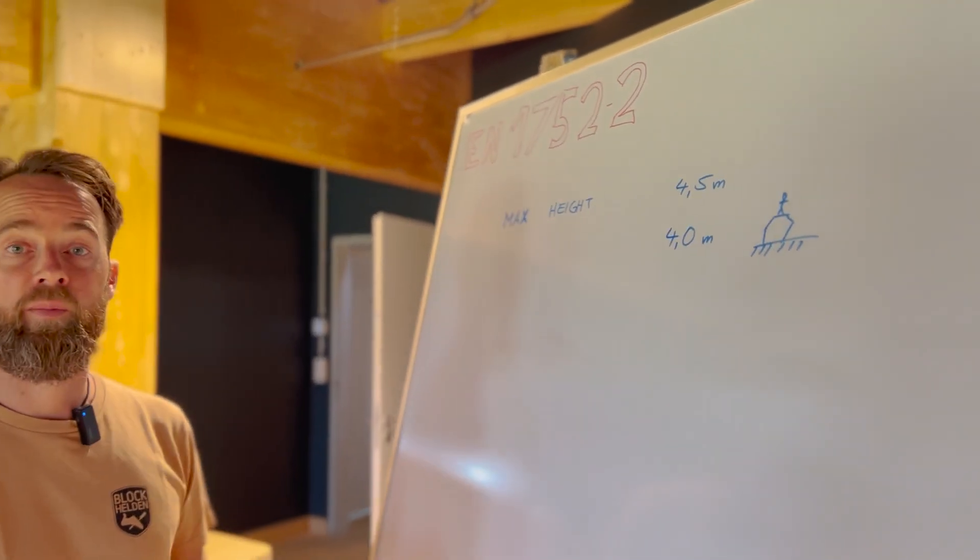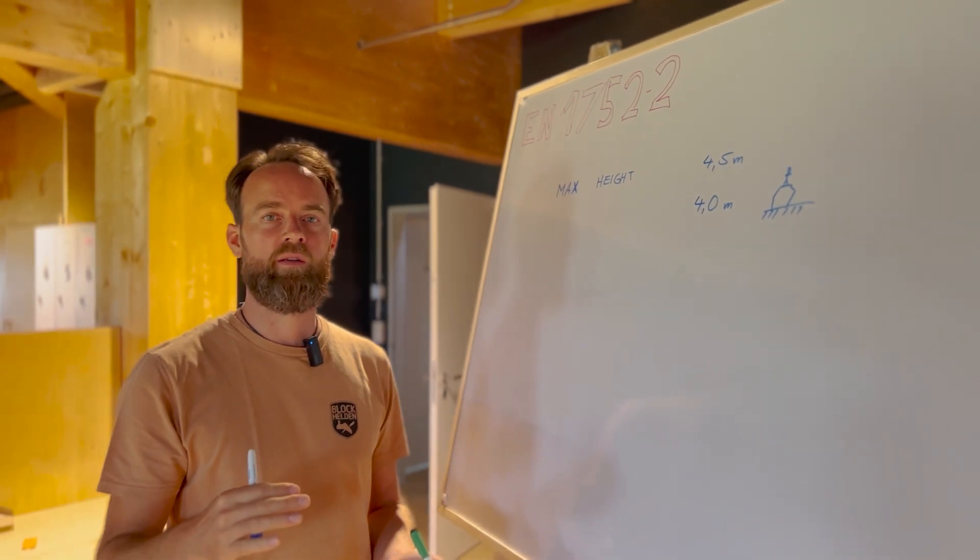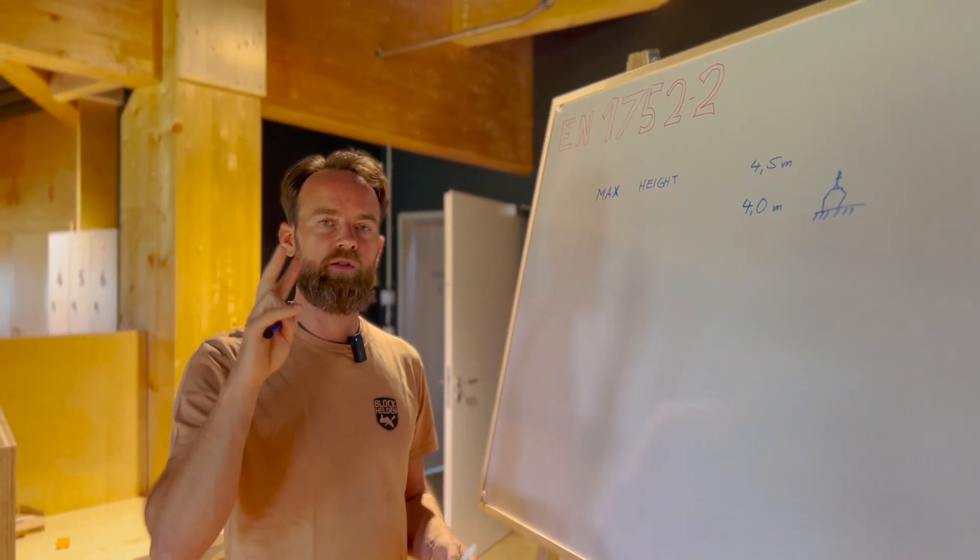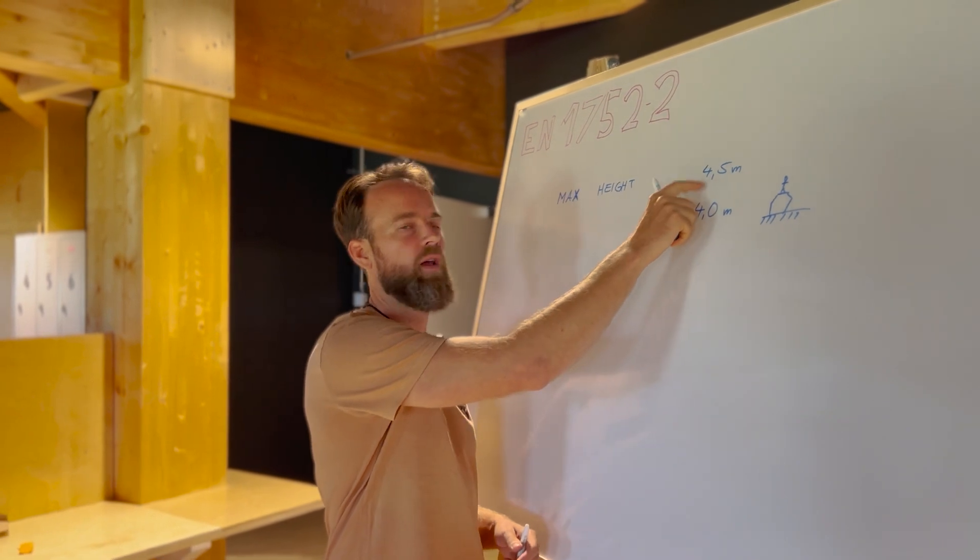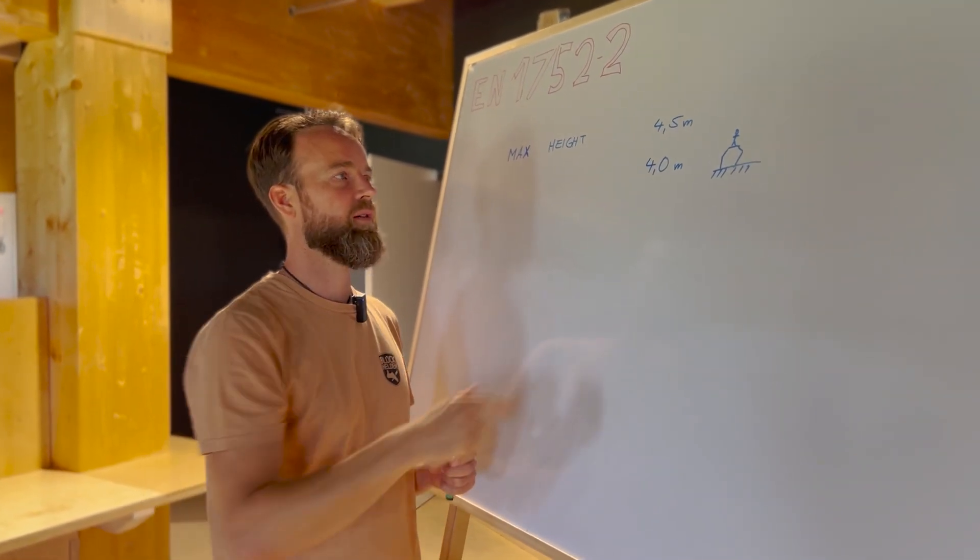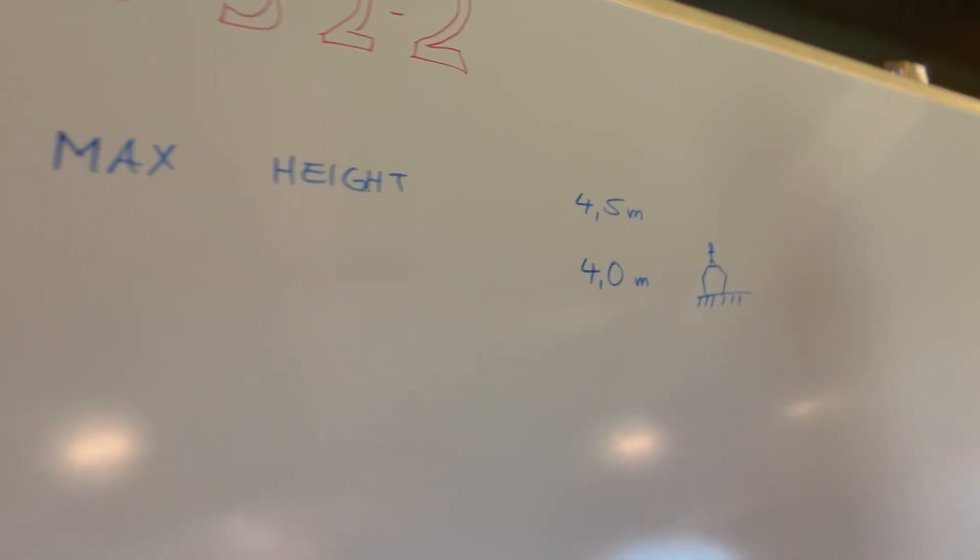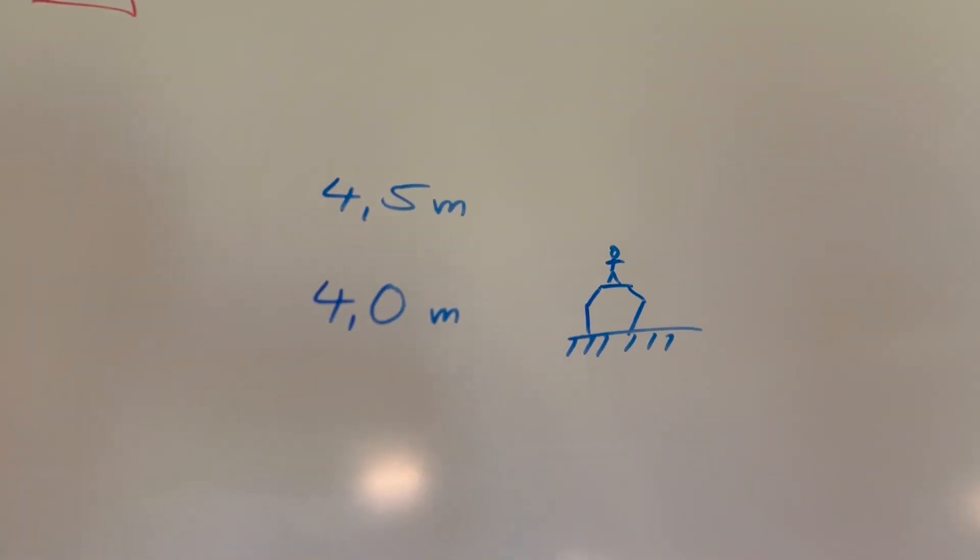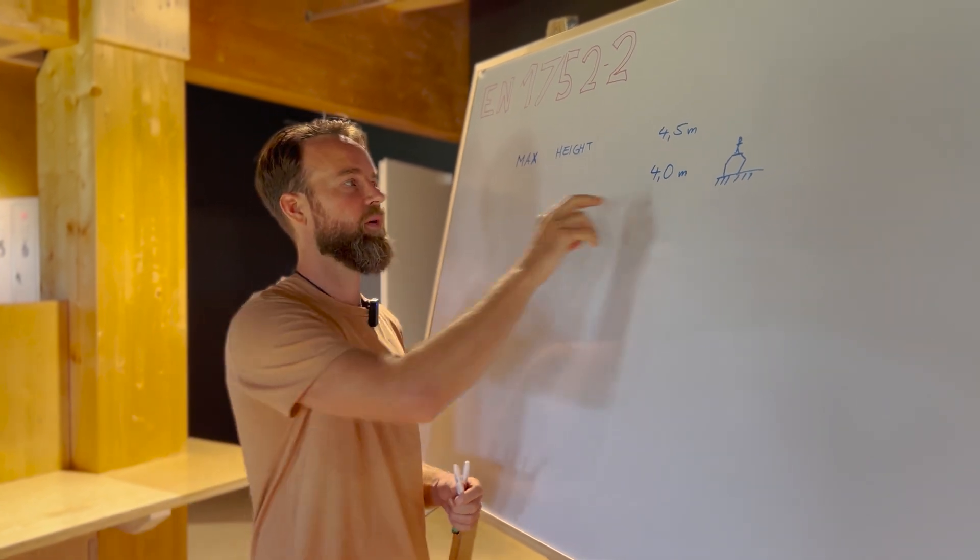The first major point is maximum height of your boulder wall, and there are actually two maximum heights. The first is if you cannot top out, it's 4.50m, and if you can top out, like on a boulder block it's only 4m. That's your corridor, you cannot go above it.